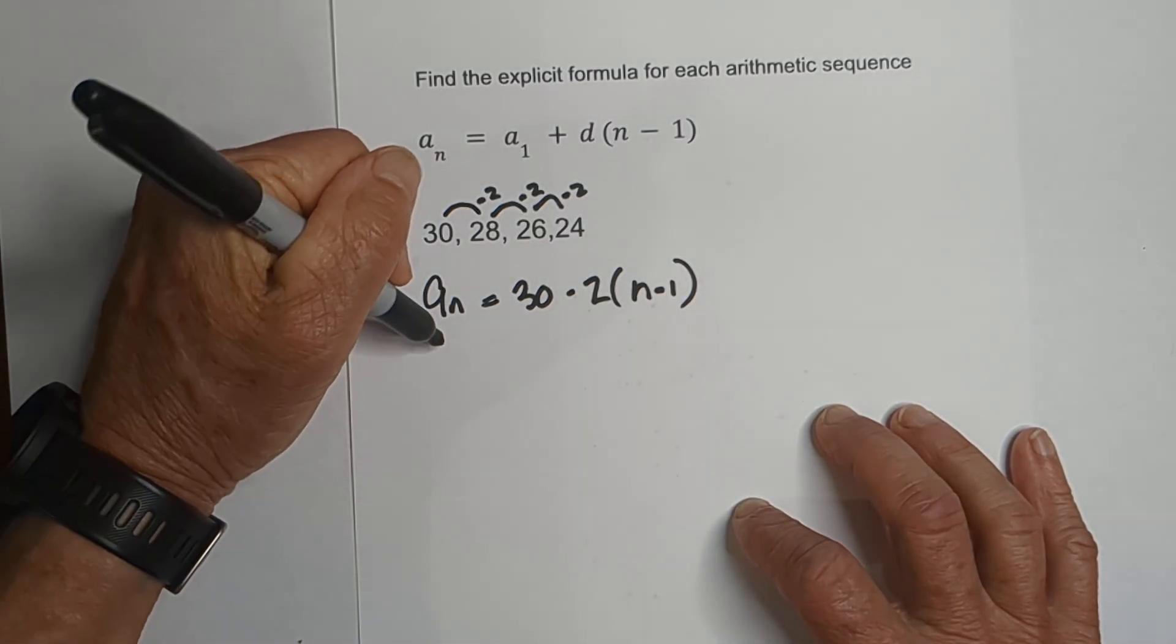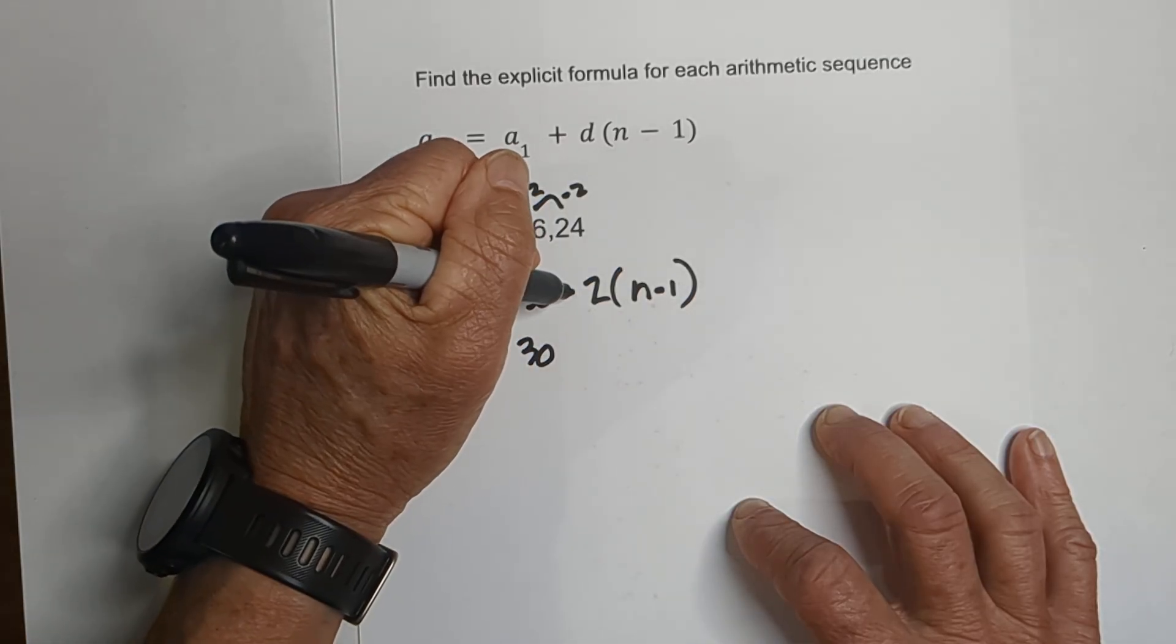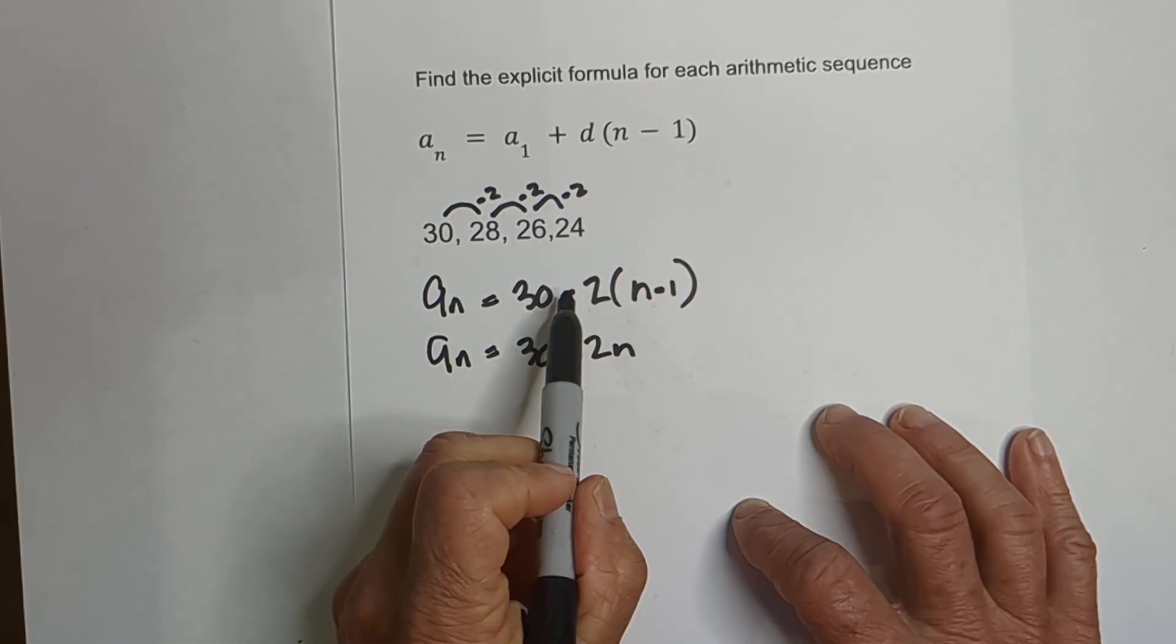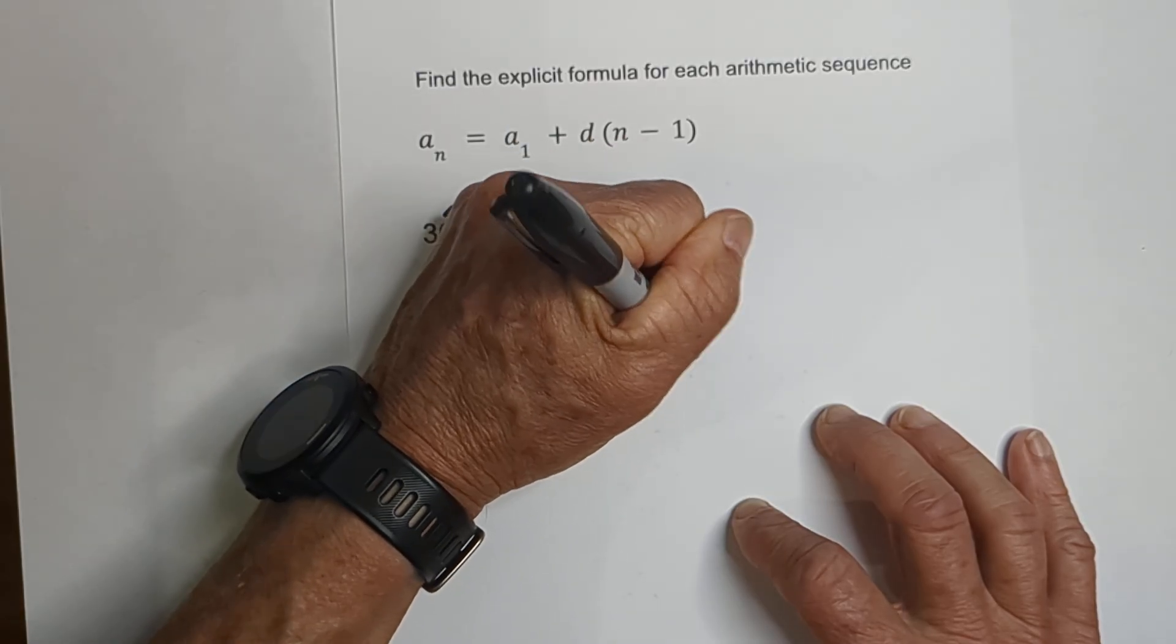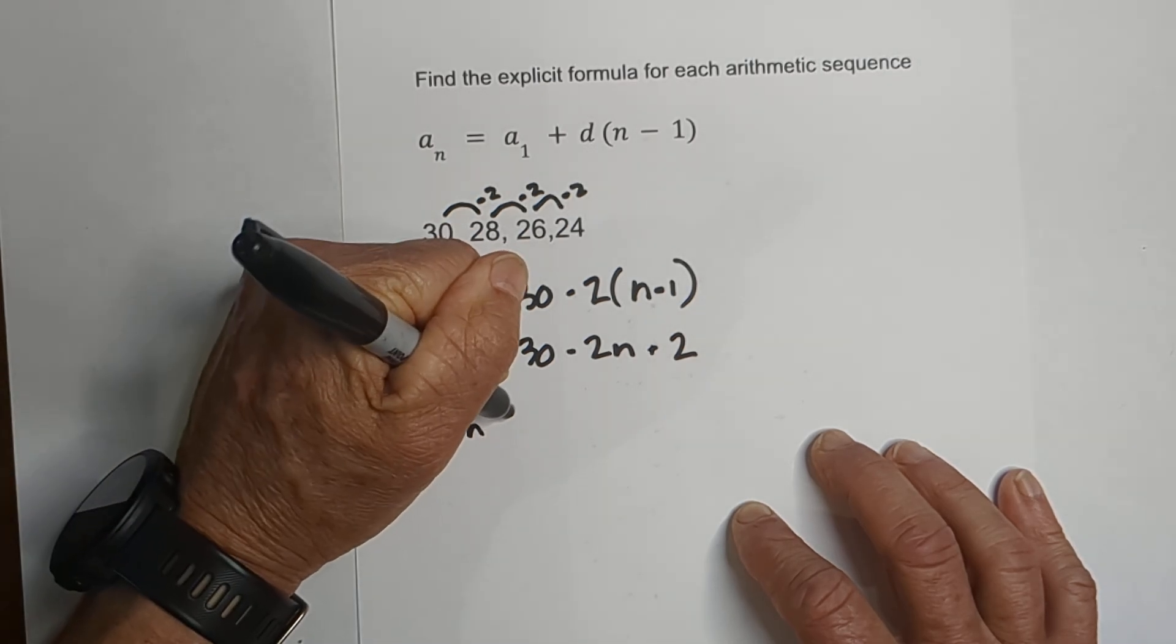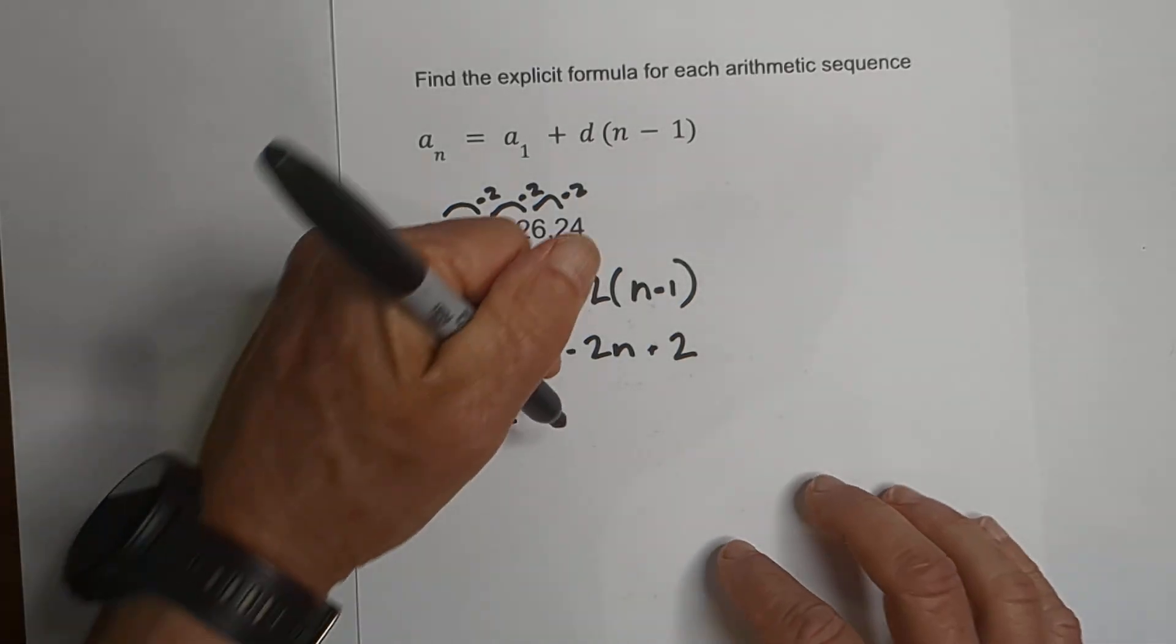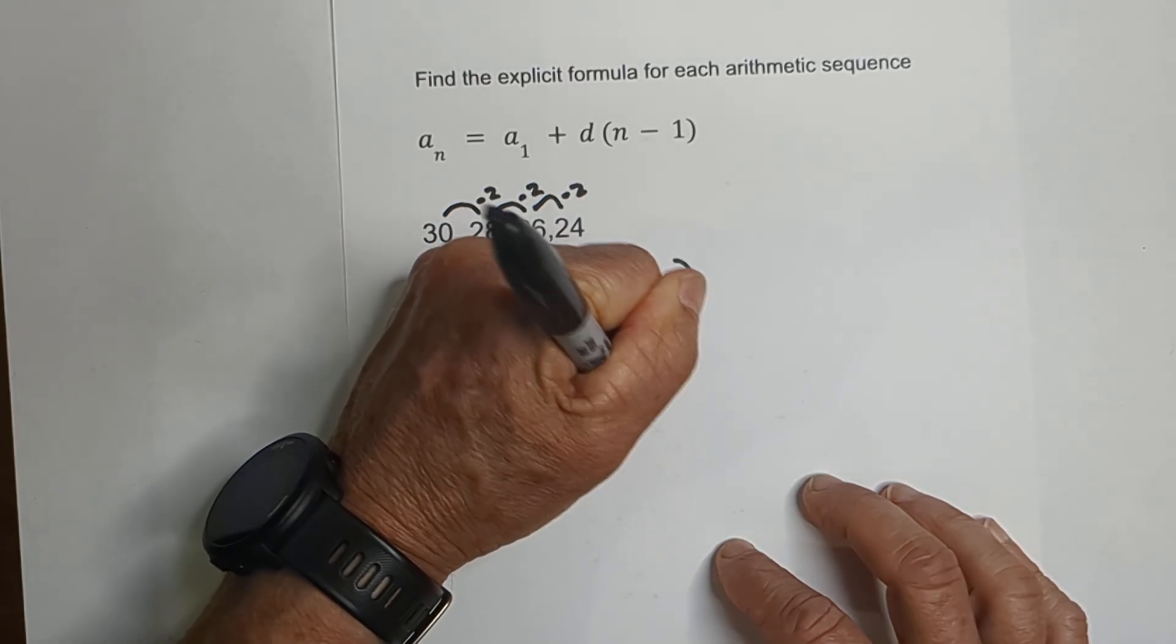Let's go ahead and clean this up. a_n equals 30. Remember, negative 2 times n is negative 2n. But in this case, remember when you have the same sign it becomes positive, so it becomes a positive 2. Now let's combine terms: a_n equals 30 and 2 equals 32 minus 2n.